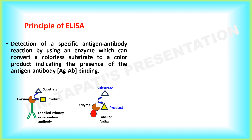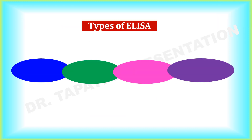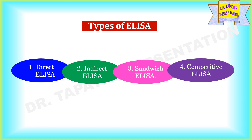The basic principle of ELISA is to detect a specific antigen-antibody reaction by using an enzyme which can convert a colorless substrate to a colored product, indicating the presence of antigen-antibody binding. For this purpose, a multi-well polystyrene microtiter plate, also known as an ELISA plate, is generally used. The well of the microtiter plate provides the solid support used to immobilize the antigen or antibody of interest. There are mainly four types of ELISA: direct, indirect, sandwich, and competitive.